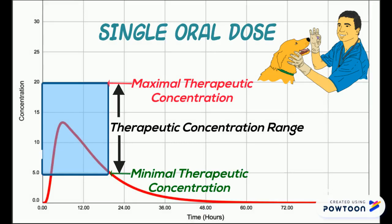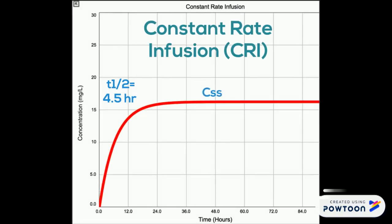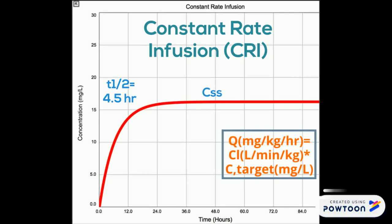In this case, a single dose of a drug was given by an extravascular route — orally — and the duration of action will last as long as the drug is within that therapeutic range. For drugs with a very short half-life, the safest and most reliable administration route may be by constant rate of infusion, or CRI, which we described in detail in a previous video.